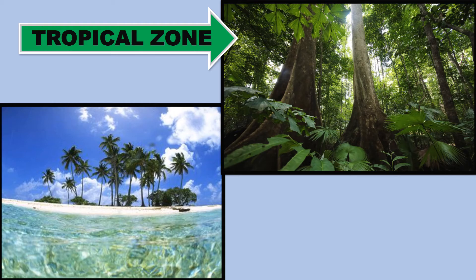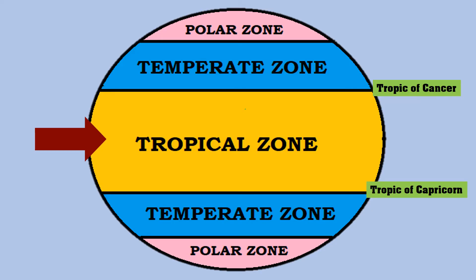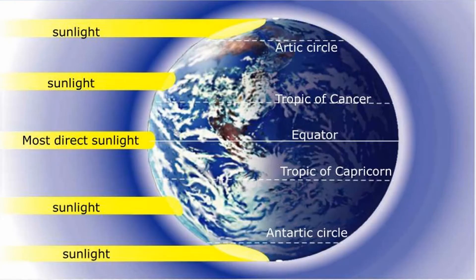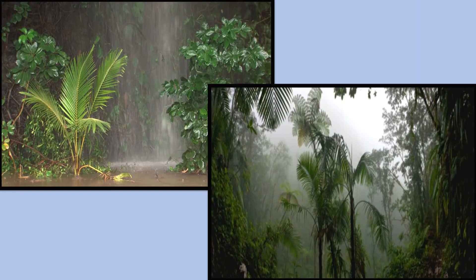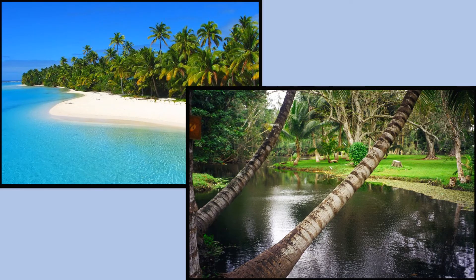The tropical zone. We will find the tropical zone between the Tropic of Cancer and the Tropic of Capricorn. It is the hottest zone. Heat from the sun falls directly on all areas in this zone. The tropical zone does not experience the four seasons. Instead, there is a wet season and a dry season. The tropical zone is also called the Torrid Zone.